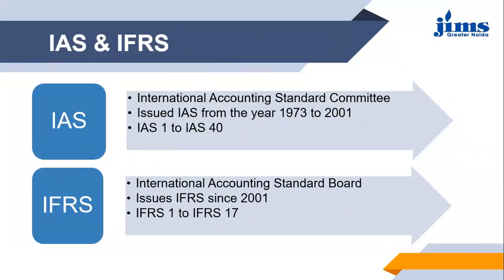Coming to the next slide — IFRS is the term we now use for what was previously called the International Accounting Standards. The International Accounting Standards Committee was formed in 1973 and was responsible for issuing the International Accounting Standards, that is IAS. IAS was issued from IAS-1 to IAS-40 by IASC from 1973 to 2001. In 2001, the IASC was converted into the International Accounting Standards Board.